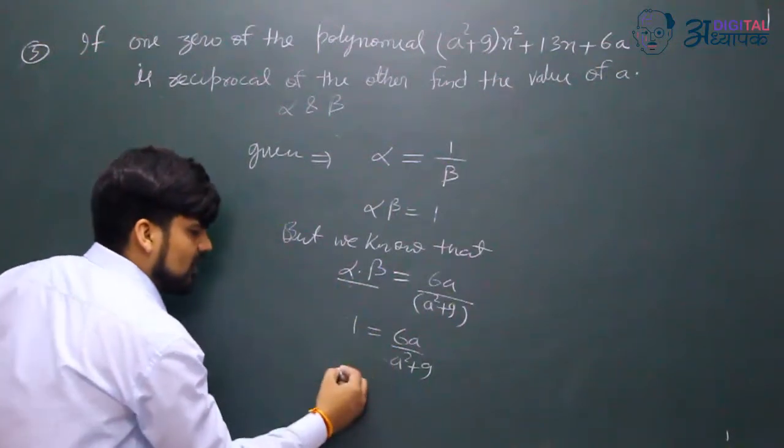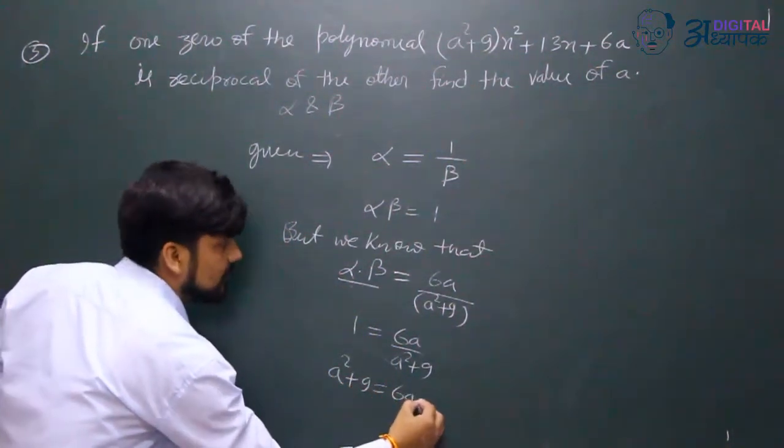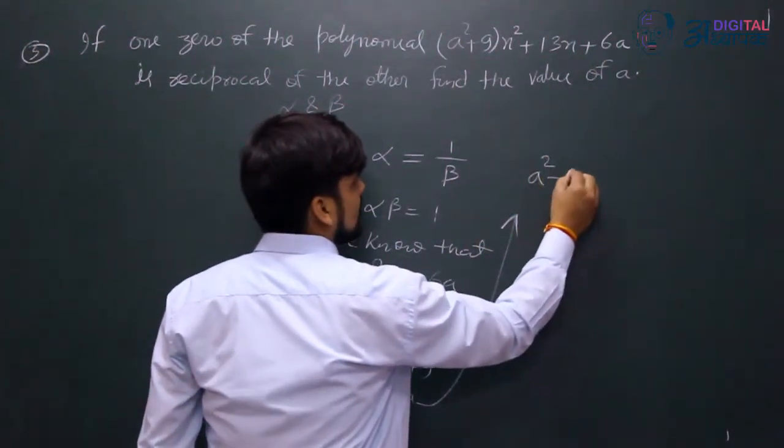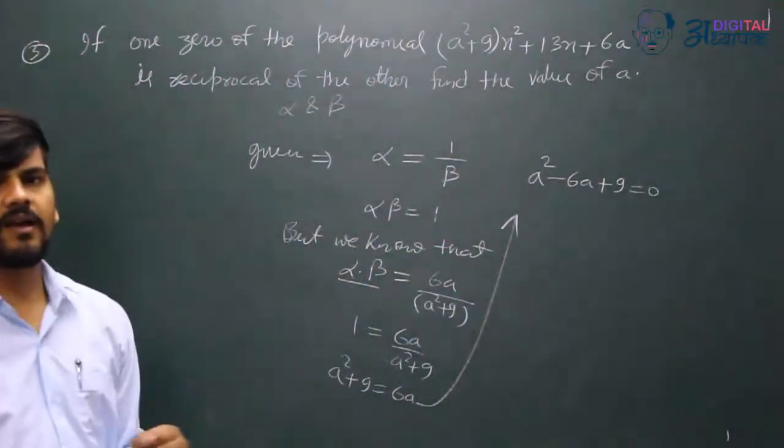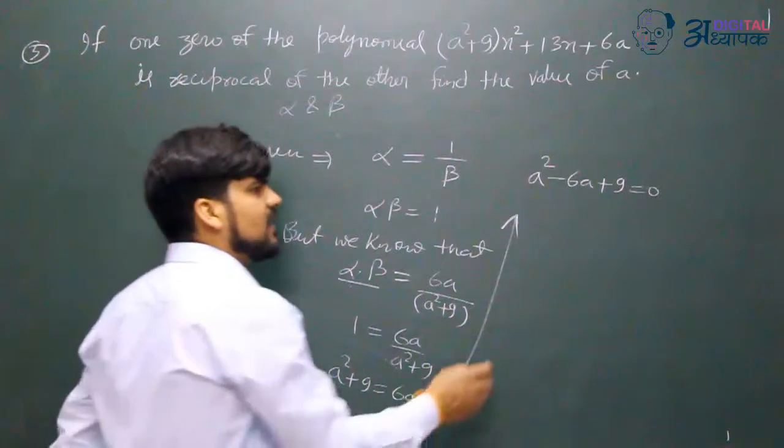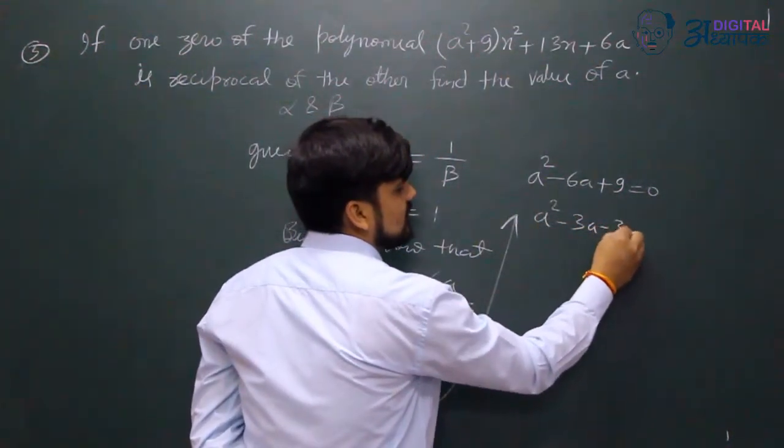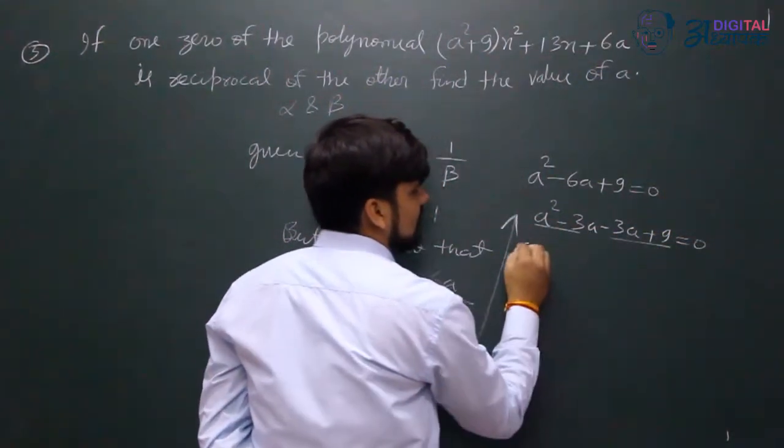So cross-multiplying, a²+9 equals 6a, which gives us a²-6a+9=0. Here we go.